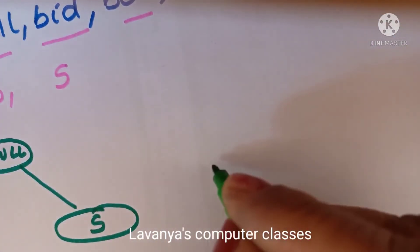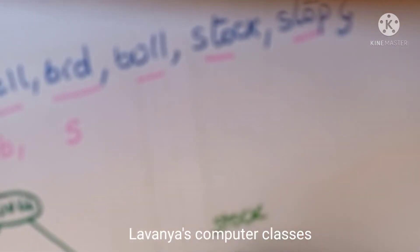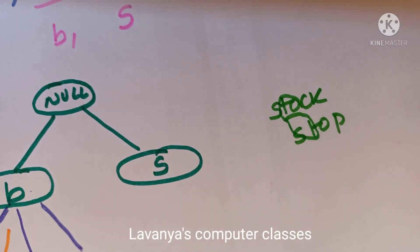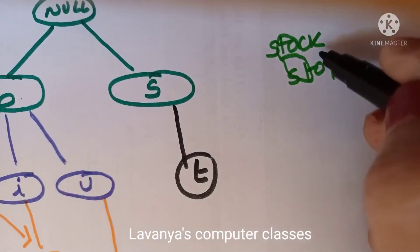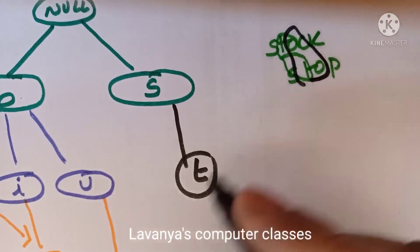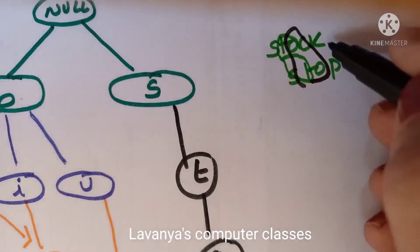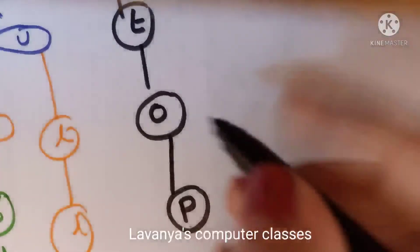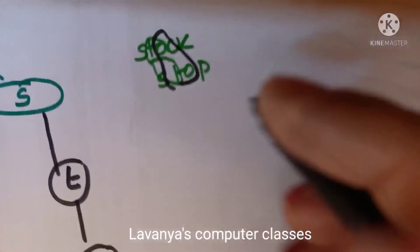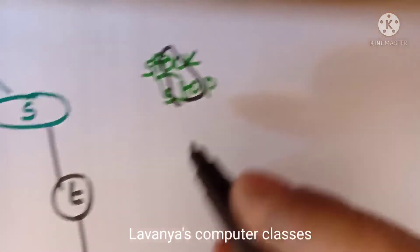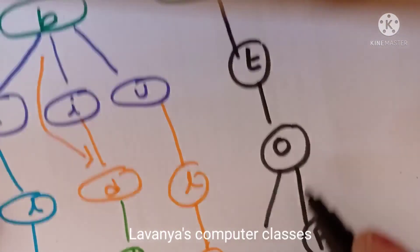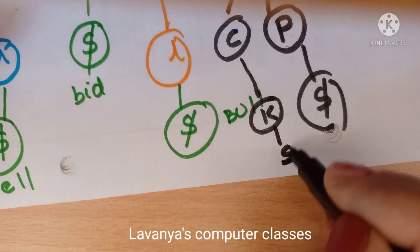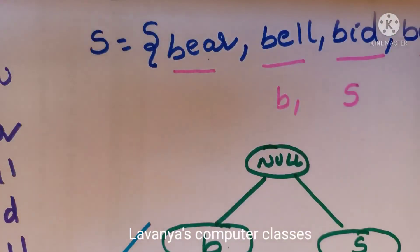Now for S: both 'stock' and 'stop' start with S-T-O, so only one pointer is needed for each of S, T, and O. At the fourth character, two pointers are needed: C (from stock) and P (from stop). S-T-O-C-K ends with a dollar symbol, and S-T-O-P ends with a dollar symbol. This is the standard trie.